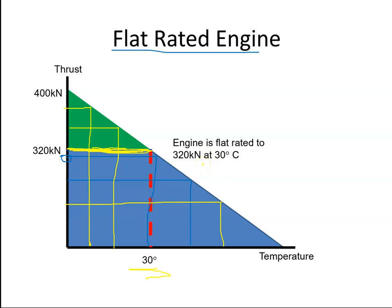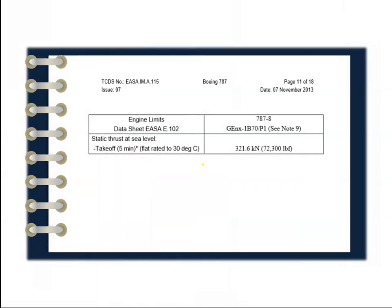So if I go back and look at the GENX engine, and specifically I'm going to look at the type certificate data sheet. We can see here the GENX1B, the engine we looked at at the start of this video. We can see that it is rated to 321.6 kilonewtons of thrust, up to 30 degrees Celsius.